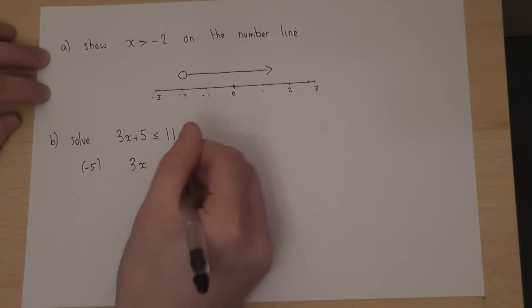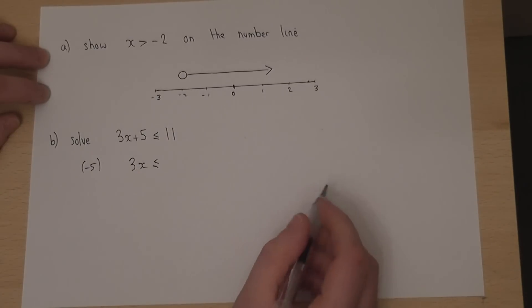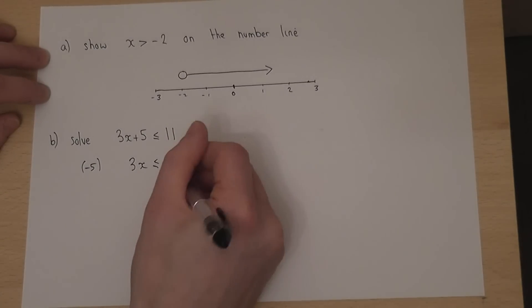However, I persist with the same notation of less than or equal to. So, taking away 5, 11 take 5 is 6.